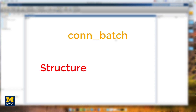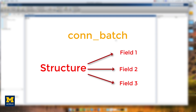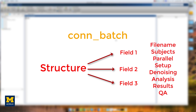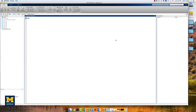A structure is a MATLAB data type that organizes several variables into containers called fields. The structure fields expected by the conn_batch command are the following: filename, subjects, parallel, setup, denoising, analysis, results, and QA. The variable that we will pass as an argument to the conn_batch command needs the fields listed above. If any of the fields aren't filled in, they will revert to the defaults specified on the conn_batch webpage, which you can find in the link below.